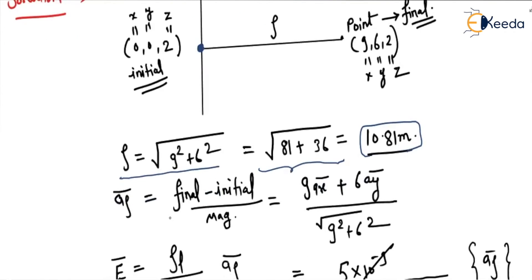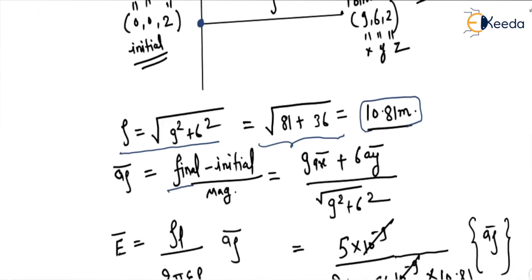So a_rho vector: as we know, final minus initial divided by magnitude. The final point is (9, 6, 2) because we have to calculate the electric field at (9, 6, 2), and the initial point is (0, 0, 2). So it will be 9â_x plus 6â_y divided by square root of 9² plus 6².